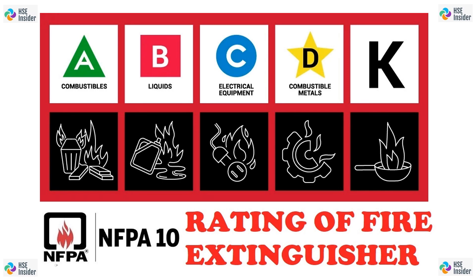Next comes Class D fires, which involve combustible metals such as magnesium, sodium, lithium, and potassium. There are also no numbers associated with the Class D rating of extinguishers. Instead, Class D extinguishers are rated based on their effectiveness against a specific type of combustible metal, such as magnesium, sodium, lithium, or potassium. For example, a Class D fire extinguisher rated for magnesium fires might be labeled as D-MG, indicating it is specifically designed for extinguishing fires involving magnesium.